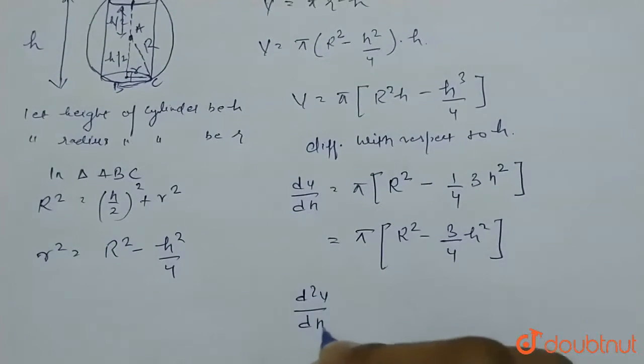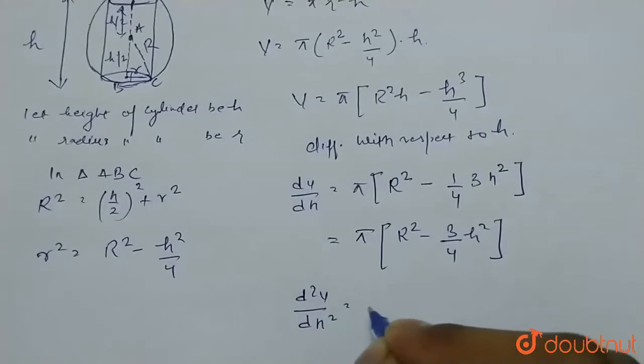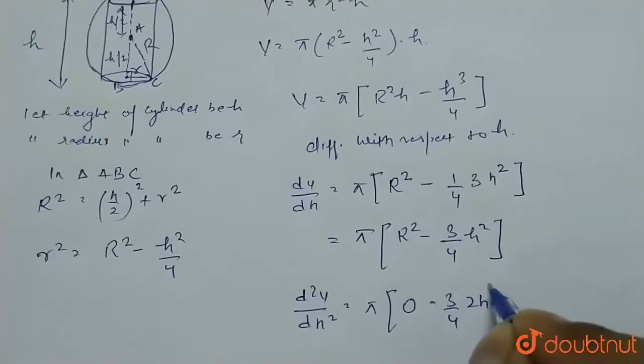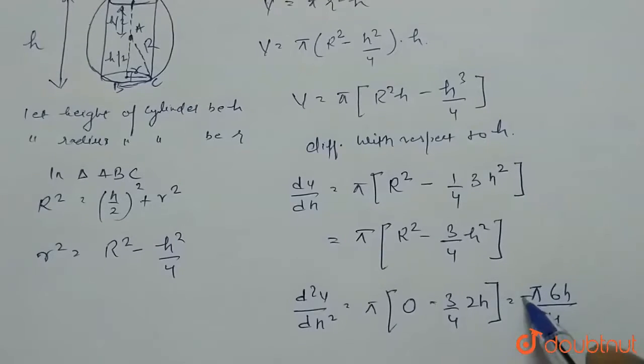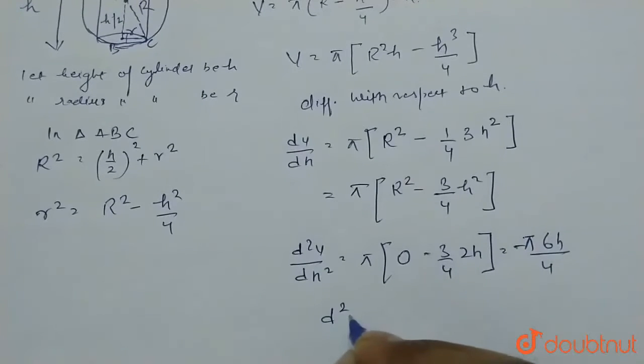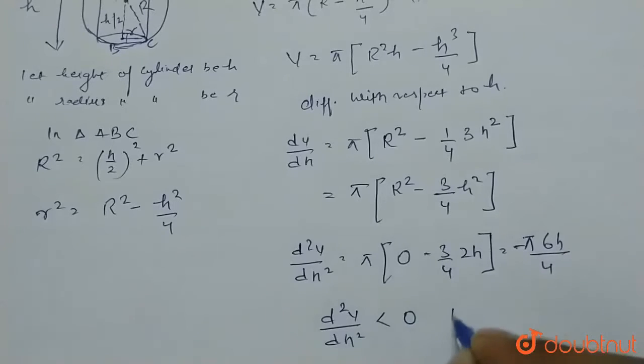Now again differentiate this. d²V/dh² equals π. This is constant term, this will be 0, and minus 3/4 times 2h. That will be π minus 6πh/4. You can see that d²V/dh² is negative. And when the second differentiation is negative, that means less than 0, we have maxima.